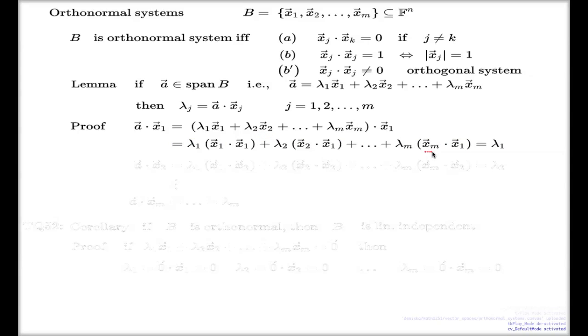And now I make the observation that each of these individual dot products, the first one is simply 1 because of the property b in the definition of the orthonormal system. And all of the other brackets here, they're simply zeros because of the property a. And so the whole thing becomes just simply λ₁. Here it is. And that finishes the proof of this identity for j equal 1.